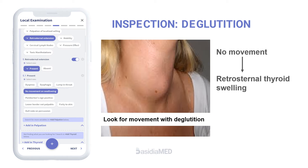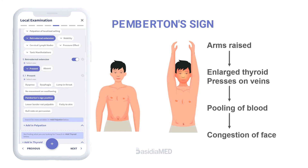A retrosternal goiter can also be diagnosed on inspection using Pemberton's sign. Ask the patient to raise both arms above the head. Obstruction of the great veins at the thoracic inlet results in pooling of blood, causing flushing of the face. This is called Pemberton's sign.